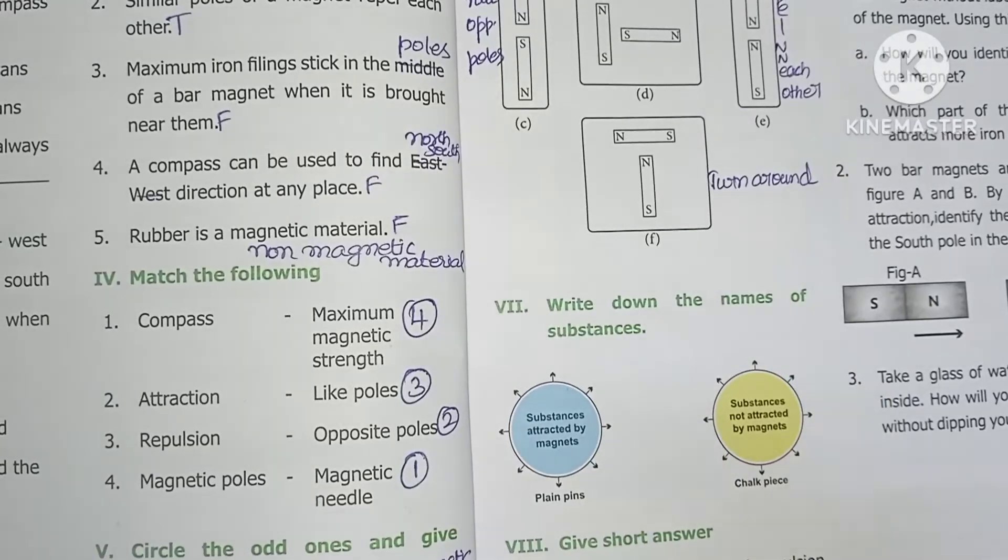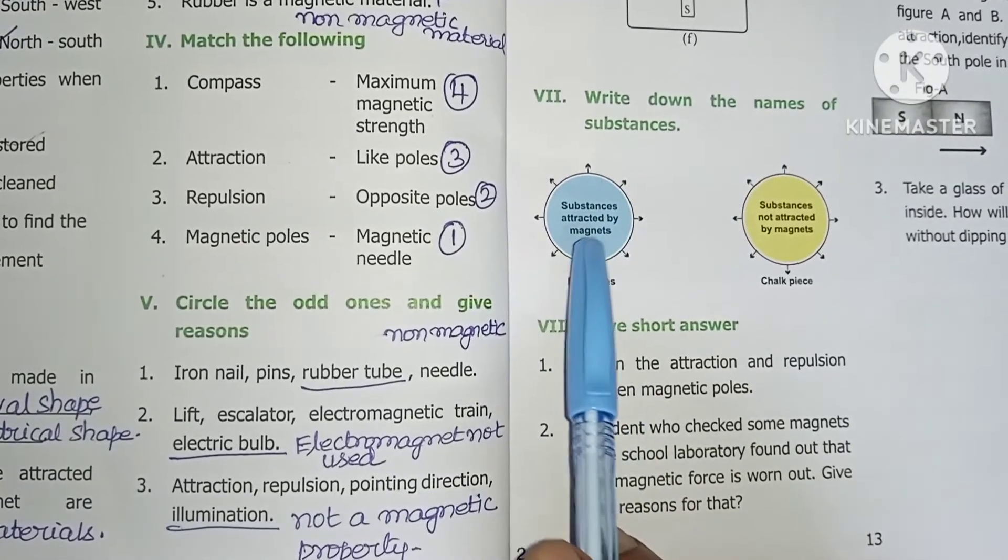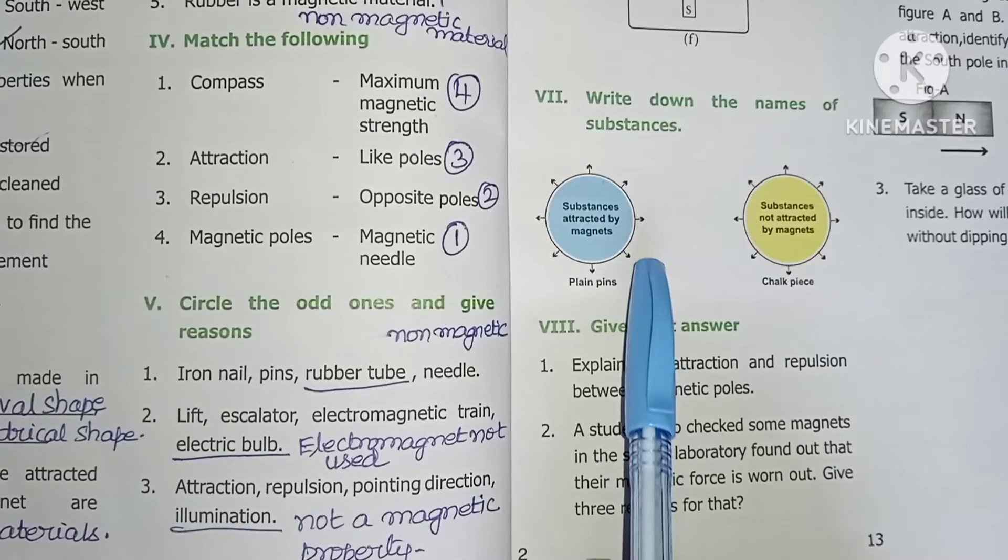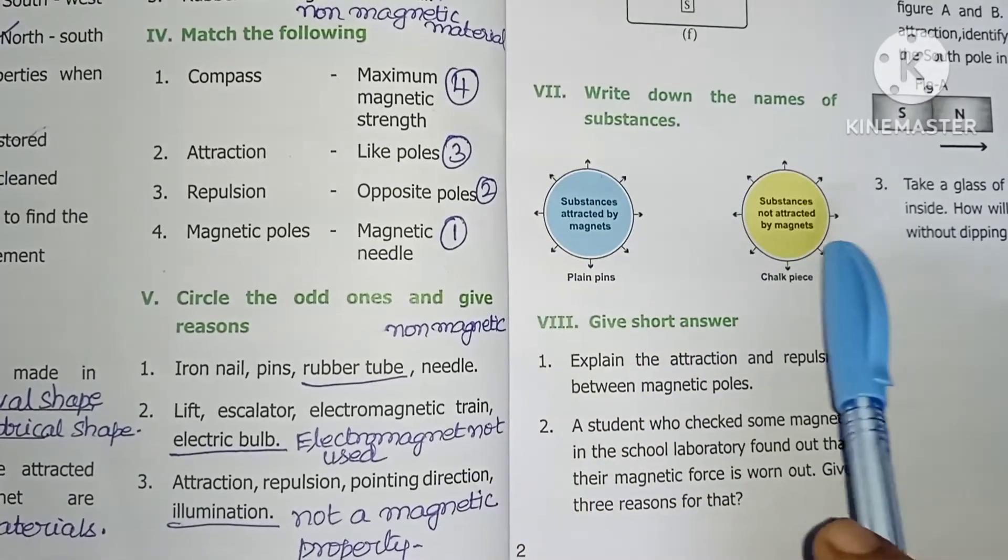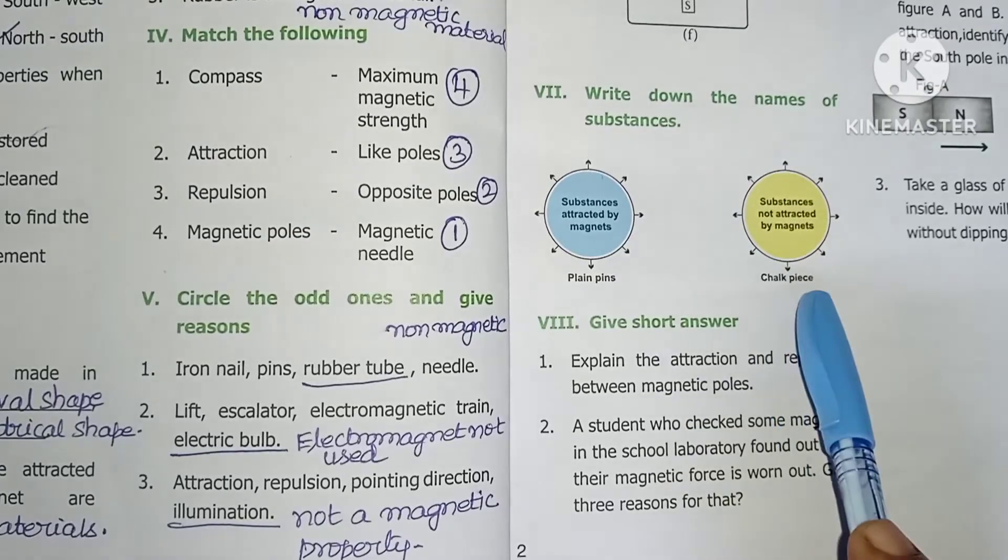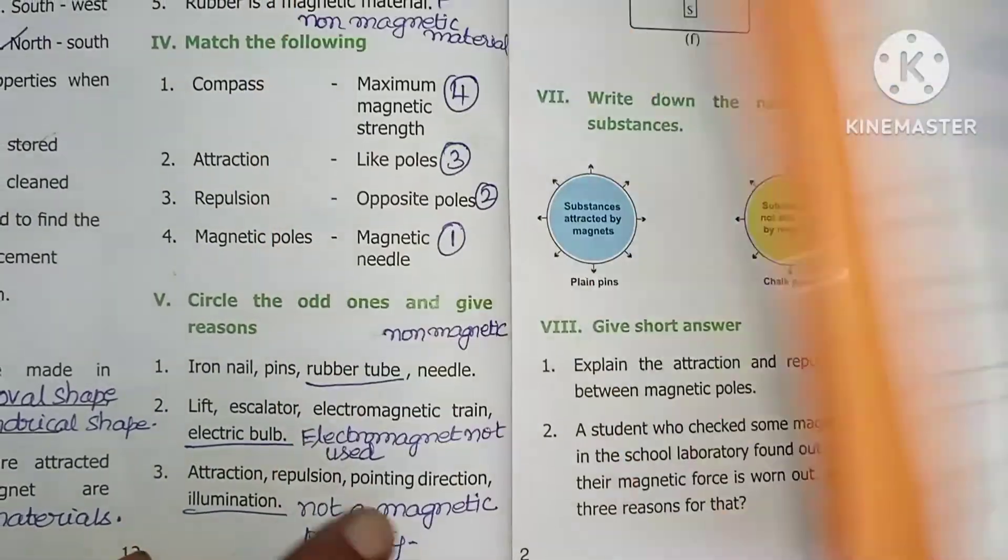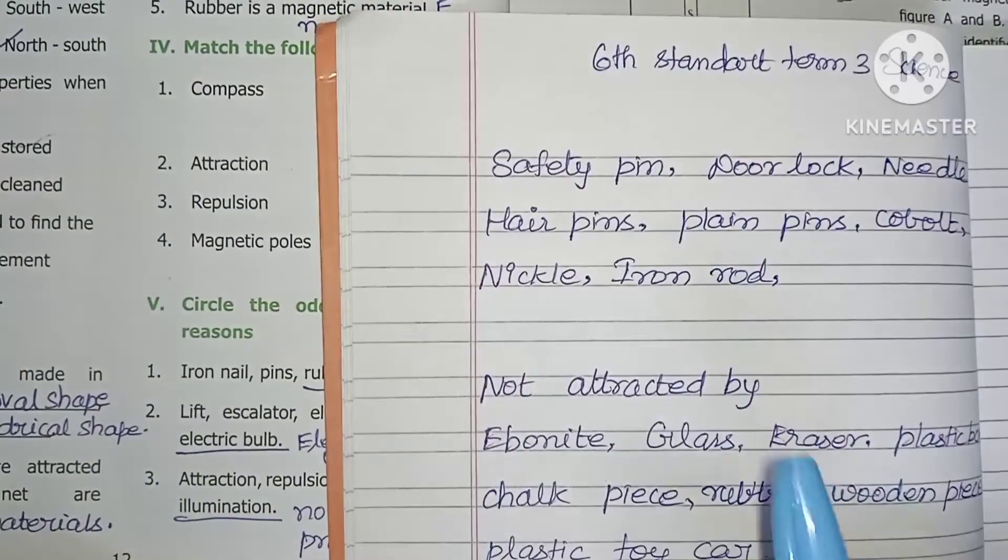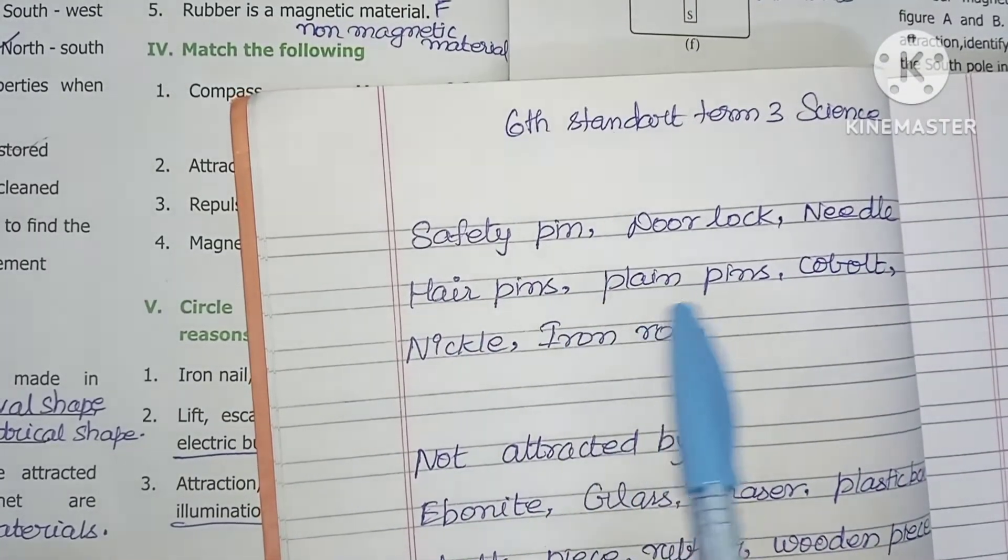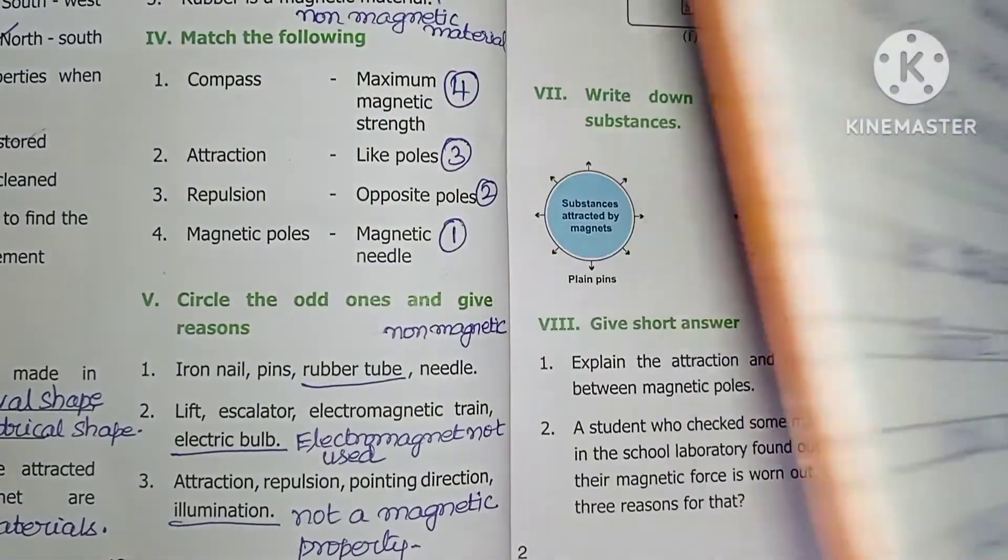Write out the names of substances. First, substances attracted by magnet: safety pin, door lock, needle, hair pin, plain pin, cobalt, nickel, iron rod.